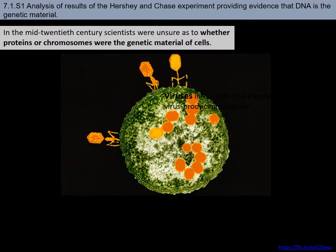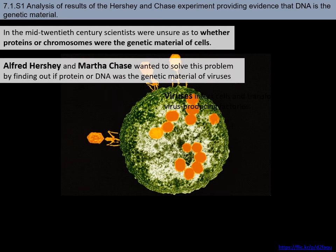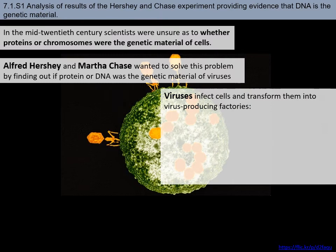Alfred Hershey and Martha Chase developed a fantastically simple and accurate way of determining whether DNA or protein is passed on through reproduction. They used a virus. Viruses are incredibly small — that large green sphere is a bacterial cell, and the little orange alien-looking creatures are viruses. Viruses are not really considered living things because they don't reproduce on their own or have a metabolism. They're basically just a collection of nucleic acid — either DNA or RNA — surrounded by a protein coat.